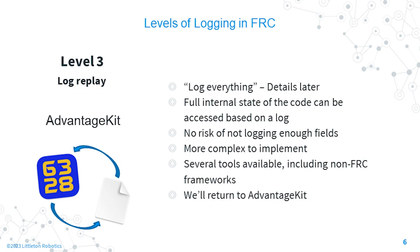Level three logging — AdvantageKit logging — tries to address that final flaw of onboard logging. You might also hear this called a 'log everything' approach. The objective is that the full internal state of the code can be accessed from the log, meaning there is never a risk of not logging a field that you need. In this presentation we'll be talking about AdvantageKit, which is 6328's library for level three logging.